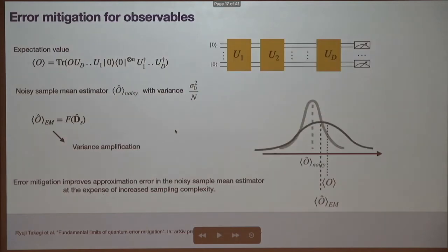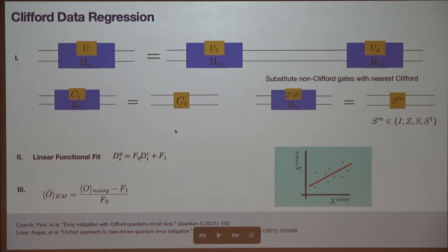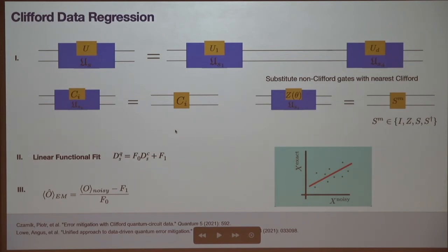Why should this be linear? Going back to the depolarizing channel as an example: the noisy expectation value is (1-p)^(number of gates) times the ideal expectation value, plus an extra term if the observable is not traceless. So in that particular model this type of measure would be exact, but in general you're not in that model.